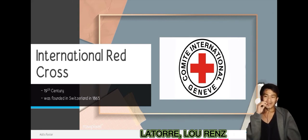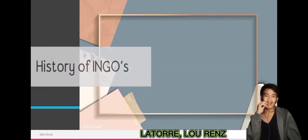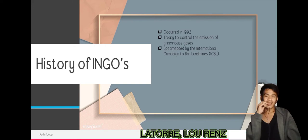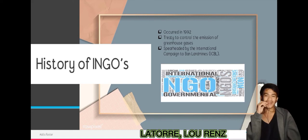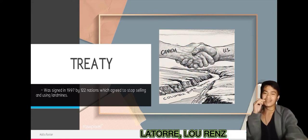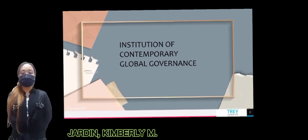A turning point in the history of INGOs occurred in 1992, when a treaty to control the emission of greenhouse gases was signed as a result of the actions of a variety of groups that not only exerted external pressure but were actually involved in the decision-making process. An international treaty spearheaded by the International Campaign to Ban Landmines, also known as ICBL, was designed in 1997 by 122 nations which agreed to stop selling and using landmines.